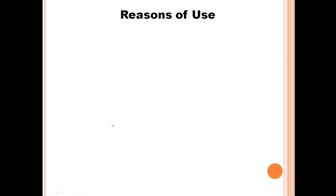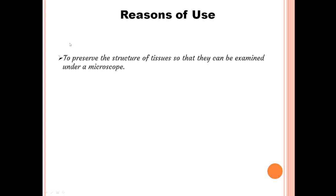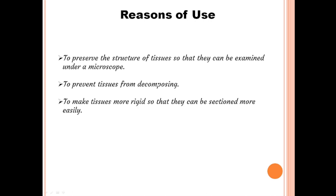The reasons for the use of formalin as a fixative are as follows. It is a widely used fixative in histological laboratories. It is very effective in preserving the structure of tissues so that they can be examined under a microscope. It is used to prevent tissues from decomposing, it makes tissues more rigid so they can be sectioned more easily, and it enhances the staining of tissues.